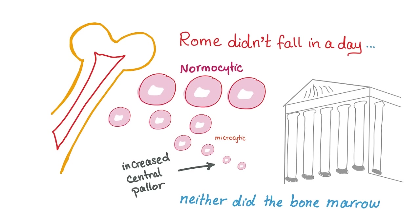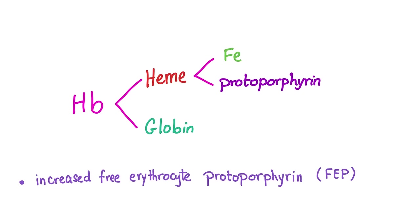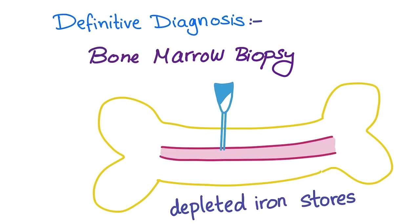Rome did not fall in a day — the anemia starts as normocytic then becomes microcytic. The microcytic cells have increased central pallor. Since protoporphyrin is left without iron, it piles up, leading to increased free erythrocyte protoporphyrin. The most accurate test to diagnose iron deficiency anemia is bone marrow biopsy — though it is very painful because the periosteum is very sensitive to pain.